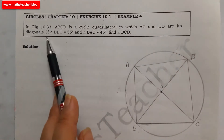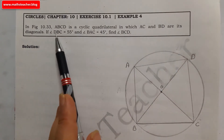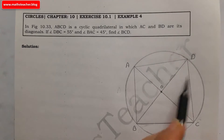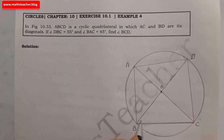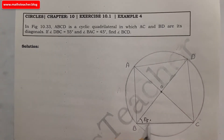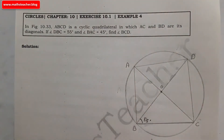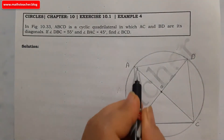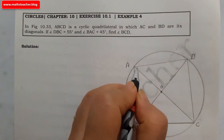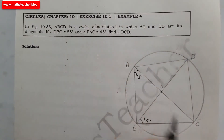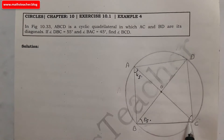AC and BD are its diagonals. If angle DBC equals 55 degrees — so this angle here is 55 degrees — and angle BAC equals 45 degrees — this angle here is 45 degrees — then find angle BCD. So we need to find this whole angle here.